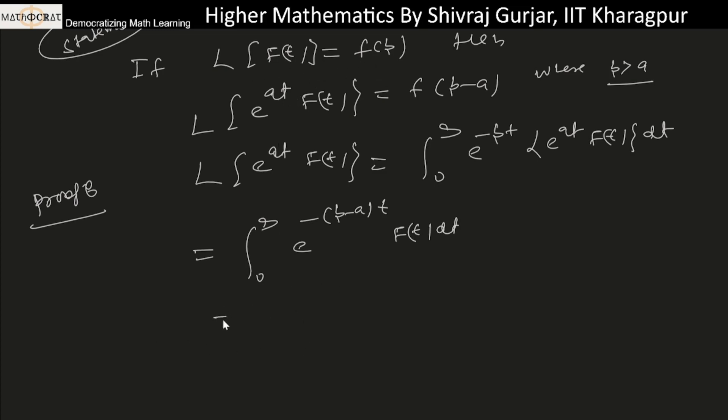This can be written as f(p minus a). Why? Because Laplace of f(t), that is zero to infinity e to the power minus pt times f(t) dt, is given by f(p).